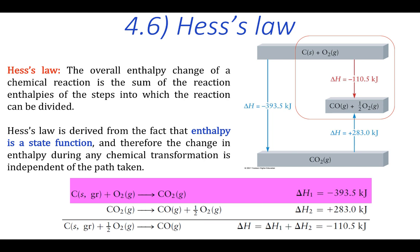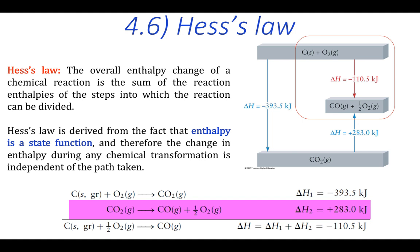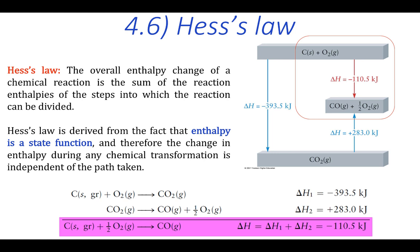The second reaction is the conversion of carbon dioxide to carbon monoxide. The experimentally determined enthalpy change for this reaction is plus 283.0 kilojoules. And so by adding these two values together, we can determine the enthalpy change for the oxidation of graphite to carbon monoxide, which turns out to be minus 110.5 kilojoules.